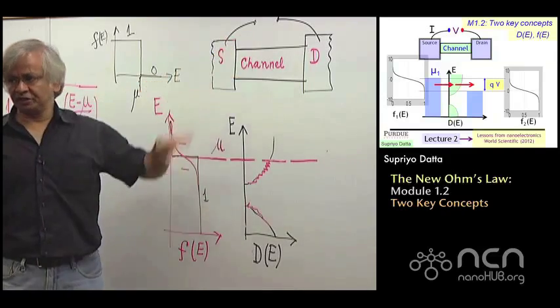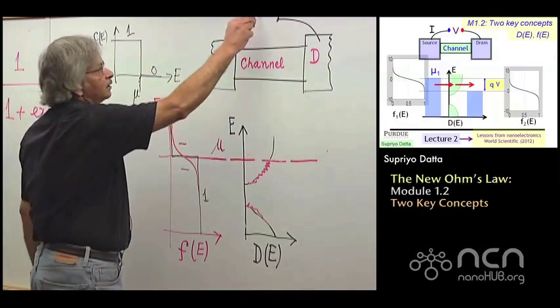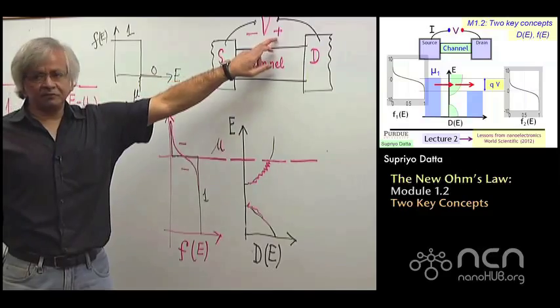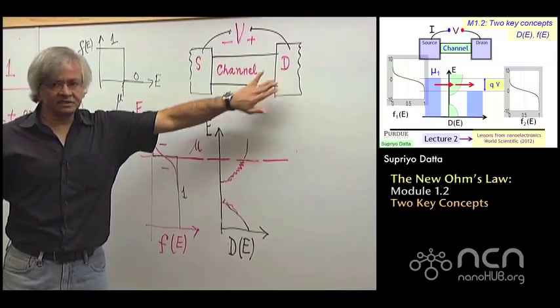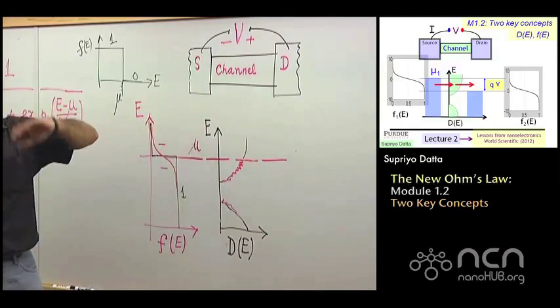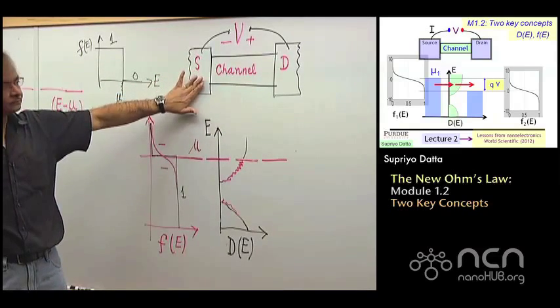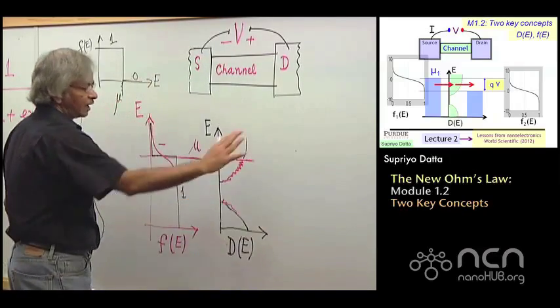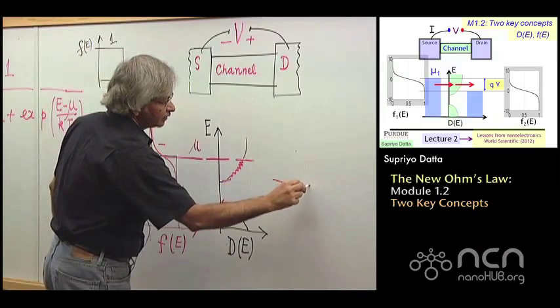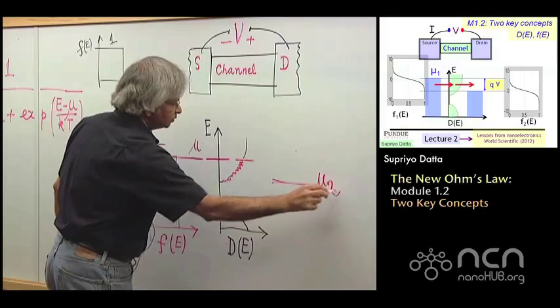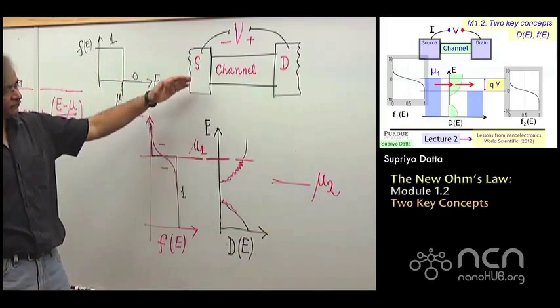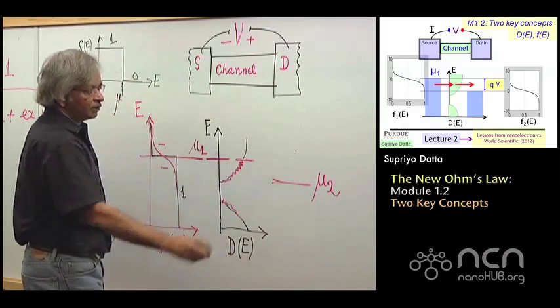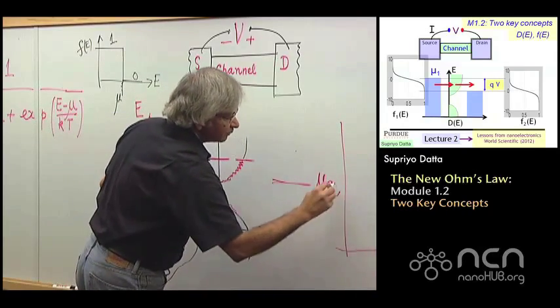Now, when you apply a voltage across it, so let's say you have a negative here and a positive here. What the positive voltage does is it takes what is in this contact and lowers it with respect to what is in this contact. So, what would happen then is when you looked at the other contact, you'd see a different electrochemical potential mu 2. So, I'll have a mu 1 in the left contact, a mu 2 in the right contact, and if I was to plot the Fermi function in the right contact, it would look something like this.